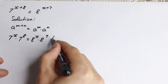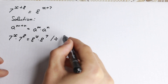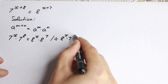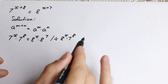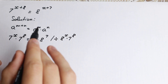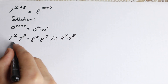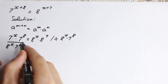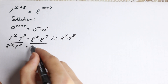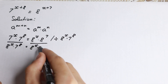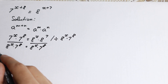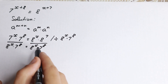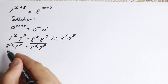We need to group our x terms on the left hand side and the constants on the right hand side. To do this, let's divide both sides by the product 8 to the x times 7 to the 8th power. The same denominator appears on both sides, so terms cancel accordingly.